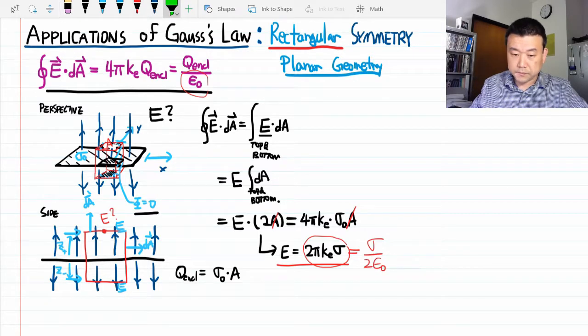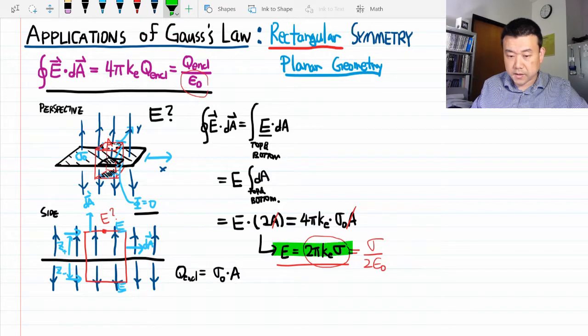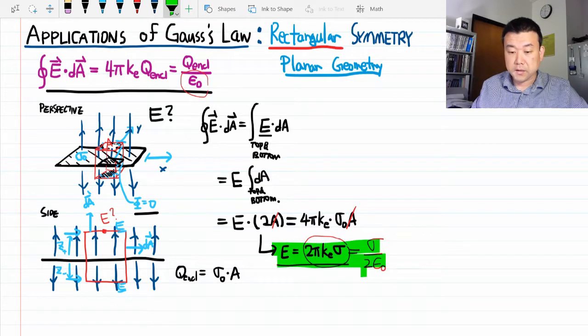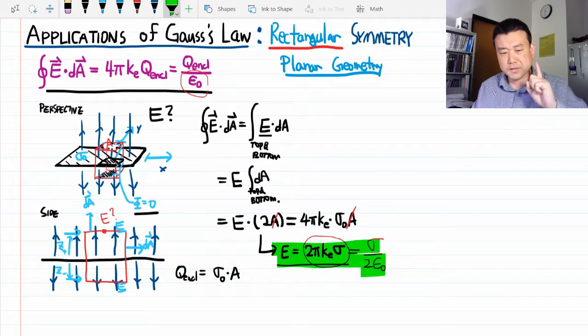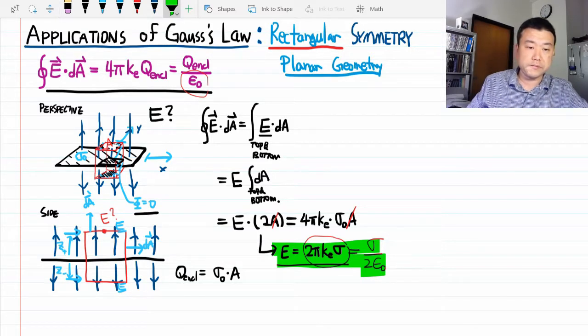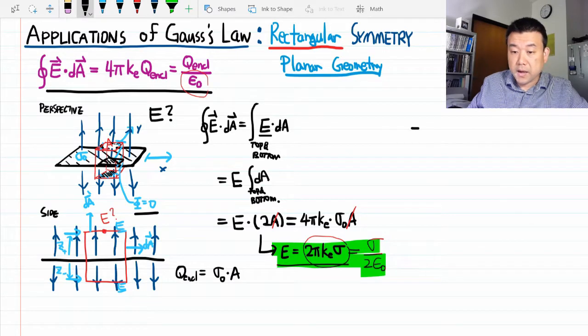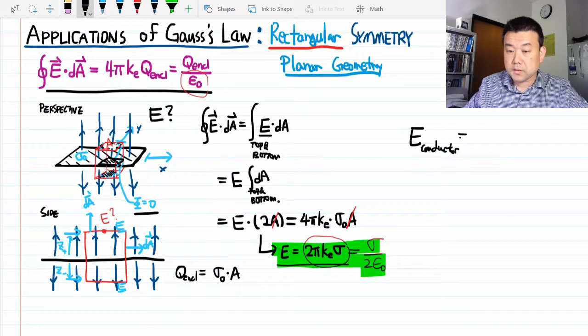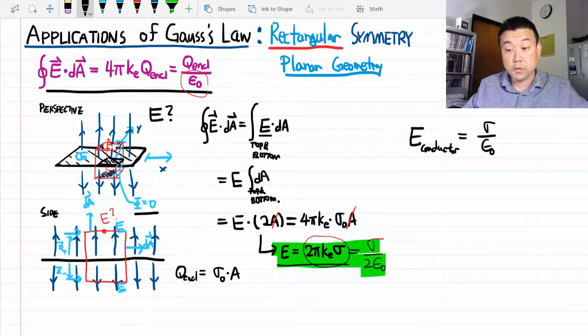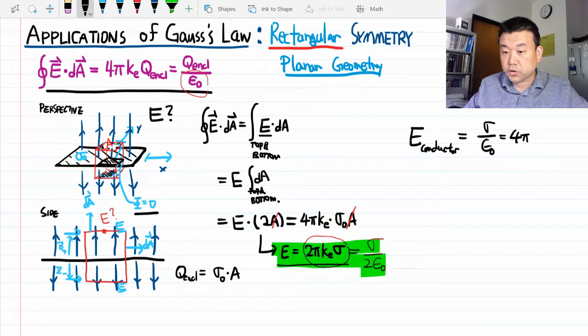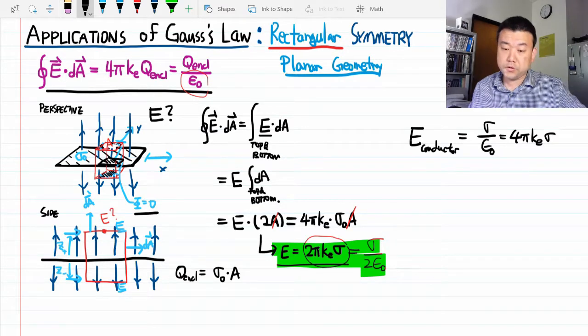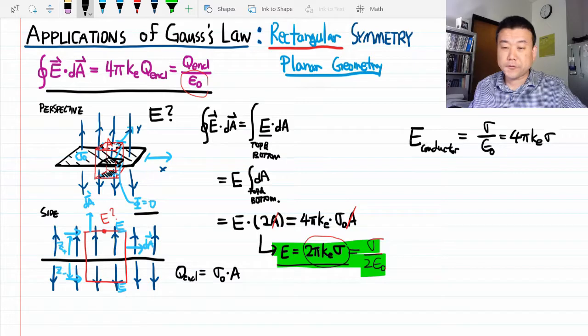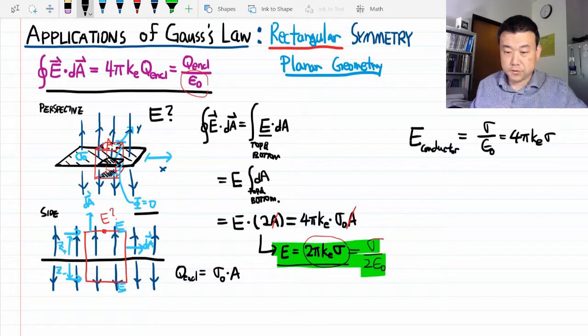I just want to point out one thing here, because later on you are going to see a similar looking but slightly different result. Later on you are going to see that electric field outside the conductor is equal to sigma over epsilon naught or 4 pi Coulomb's constant sigma. So you might wonder, what happened to the factor of 2? This is what I want you to remember.